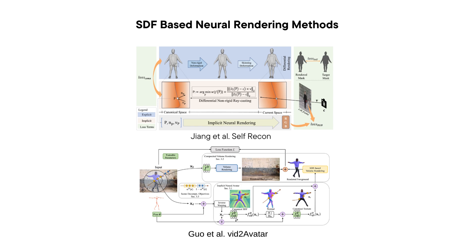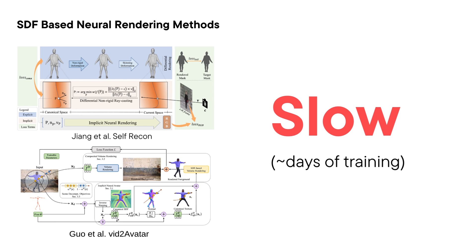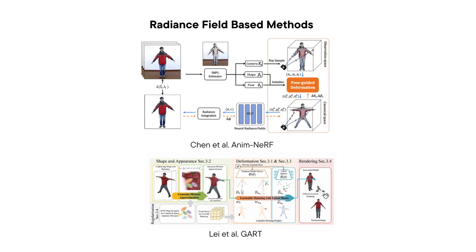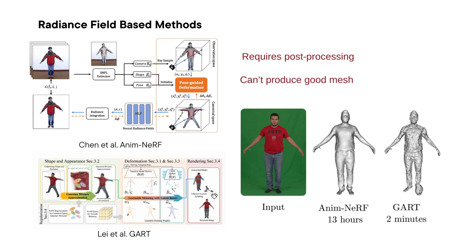Obtaining 3D human from monocular video is a challenging problem. Existing methods like SelfRecon and vid2avatar take days for 3D reconstruction. In radiance-based methods, the mesh quality of reconstruction is not of good quality.